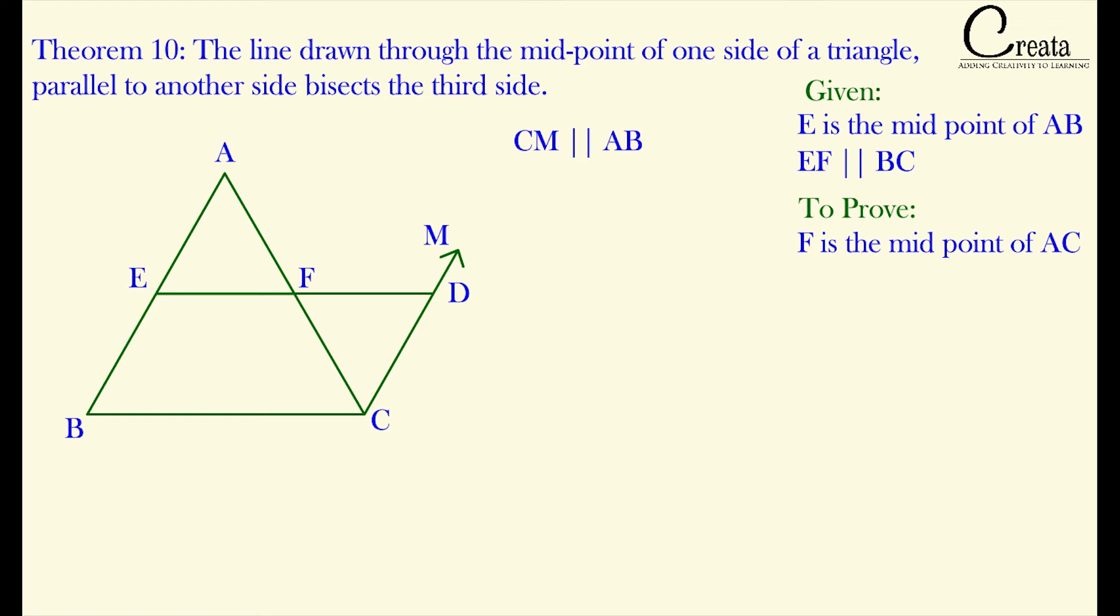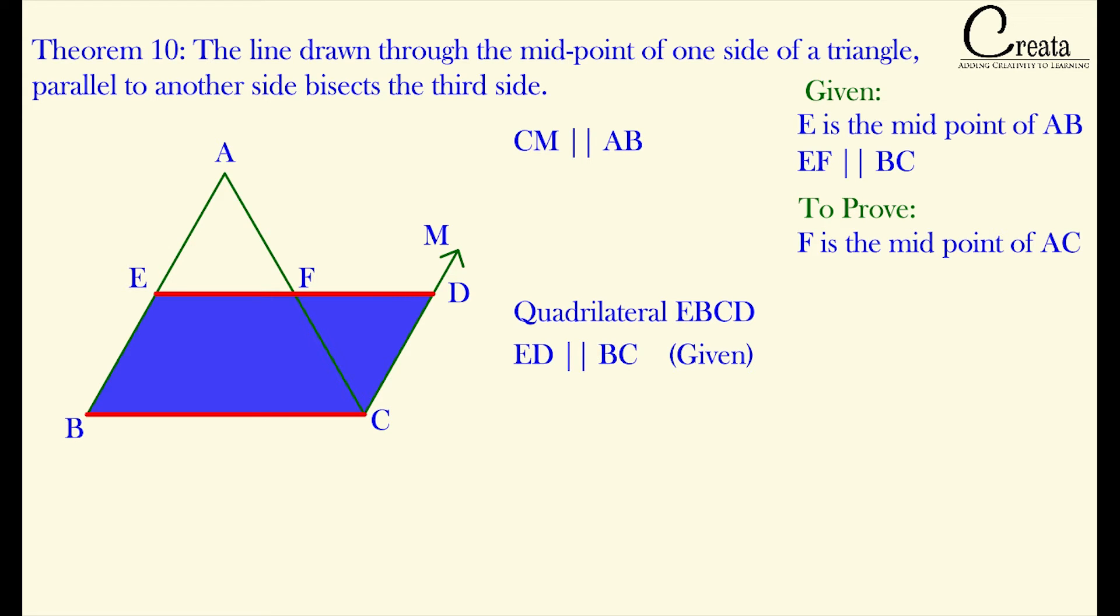So if you observe the quadrilateral EBCD, ED is parallel to BC as EF is parallel to BC, that is given, and EB is parallel to CD, that is by construction. Since both pairs of opposite sides are parallel, EBCD is a parallelogram.